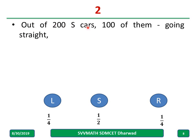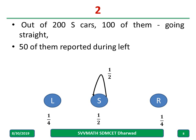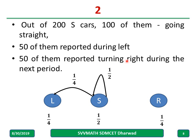Out of 200 cars heading straight, 100 of them go straight next — that is a probability of 1/2 for S→S. Then 50 of them reported turning left out of 200, giving a probability of 50/200 = 1/4 for S→L. Similarly, 50 of them reported turning right, so the probability S→R is also 1/4.